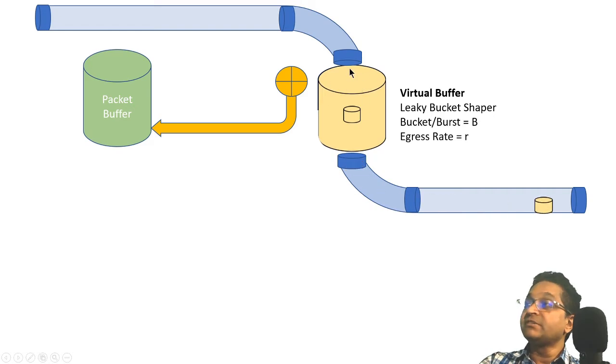Once it fills up, then this buffer cannot take any more data. What we do is, when this fills up, we stop sending traffic out of the main packet buffer.